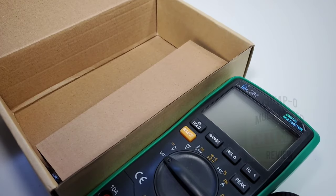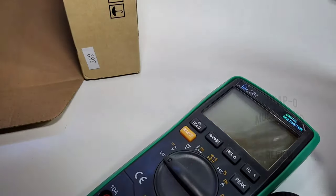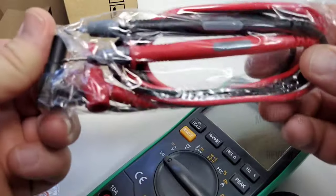It ships in a brown vanilla style box that tells you you've got a multimeter. What more do we need? At least it's in a box. In the box you're getting a set of test leads.